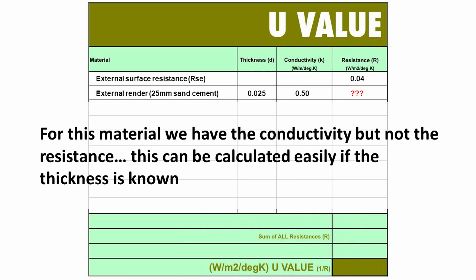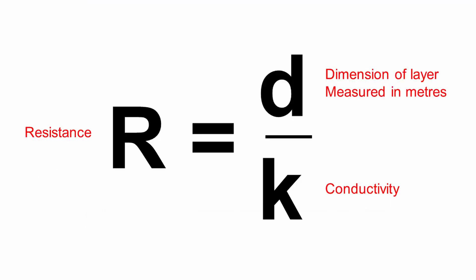Again, remember that's in metres. And we have a conductivity, but we don't have a resistance. And if you remember from the previous lecture, there is a simple calculation of R equals D over K to find out what the resistance is.